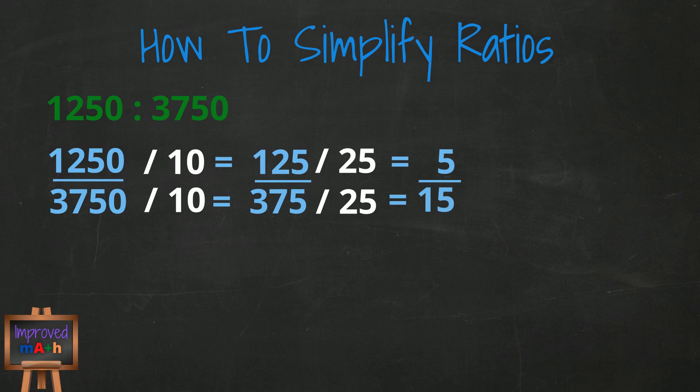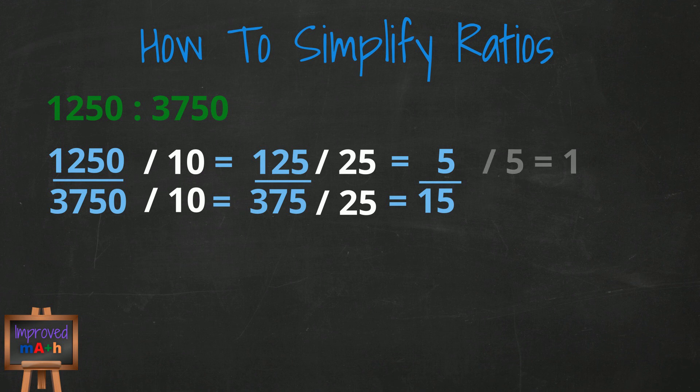We have now simplified the ratio down a lot since our original ratio. But if you look at the ratio that is still left now, you can see we may be able to reduce it even further. We can see that 5 is a factor of both 5 and 15. 5 divided by 5 equals 1. 15 divided by 5 equals 3. This ratio can now be stated as 1 to 3.